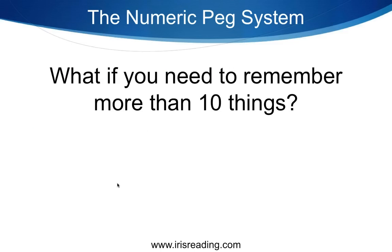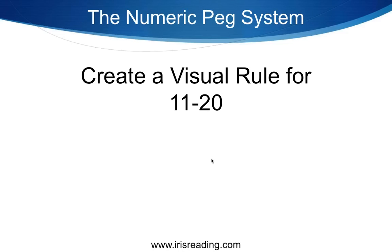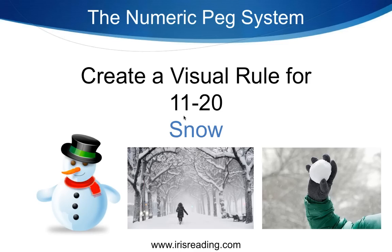What if you have to remember more than ten things? Let's say eighteen or twenty-some items. There's a simple way to expand this system. Here's how: your list has the same items one through ten, but now you also have eleven and twelve. Eleven is cookies, twelve is coffee. You need to create a visual rule for eleven through twenty — that rule can be anything easy to visualize.